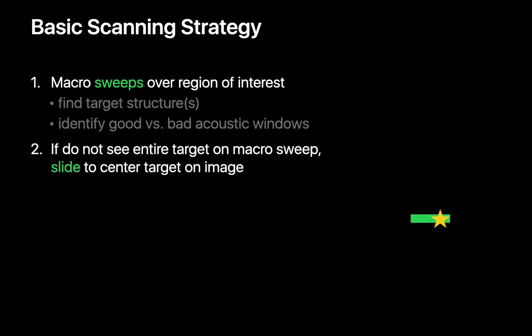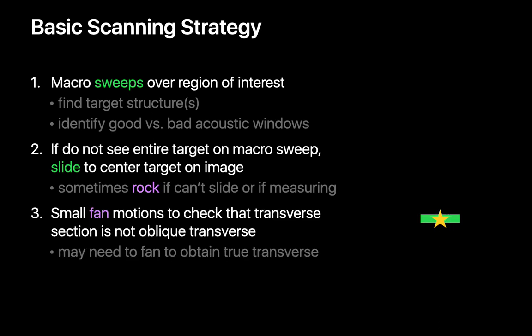If your target is near the leading or receding edge of your image when you find it, slide your probe to bring the target to the center of the image. If sliding isn't an option try rocking the probe to get a more optimal view of your target. At this point I like to use a few small fan motions to make sure I'm not cutting through the target obliquely and confirm that I'm indeed seeing a true transverse plane through the target.